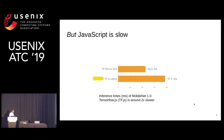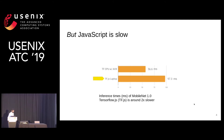Unfortunately, there is an issue with JavaScript, and that is it is slow. For example, this graph here shows that inference times of a neural network in TensorFlow.js are actually 2x slower as compared to inference times in TensorFlow native.